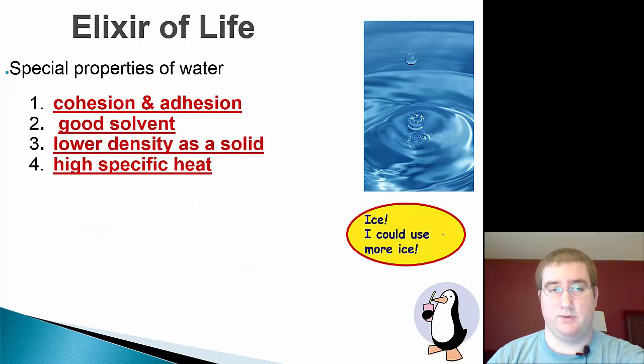Due to hydrogen bonding and polarity, there are four special properties of water that you need to know. You have cohesion and adhesion. Water is a good solvent. Water actually has a lower density as a solid. And water has a high specific heat. So we'll actually go through each of them and talk about what they actually mean.